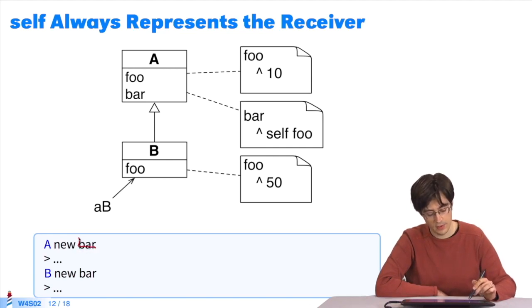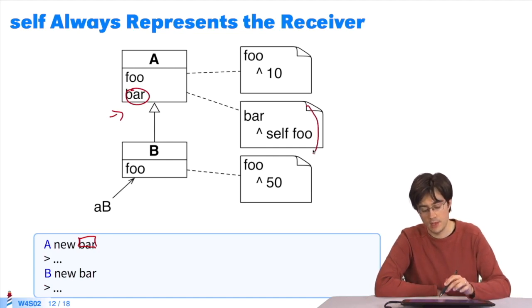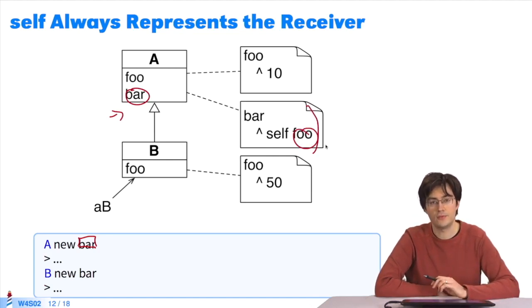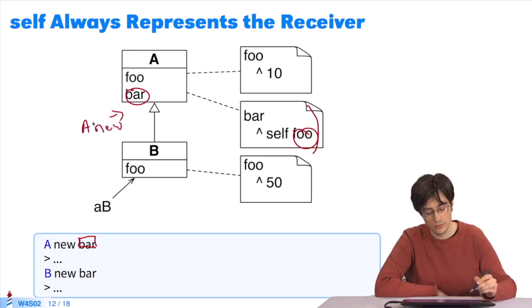Now, we'll send the message bar. Bar is sent to an instance. Bar is found here, and executed. And we send the message foo to object self. Self is this object. A new. So, we search this object for a method, foo. We search the class for this method. We find it, execute it, and return 10.